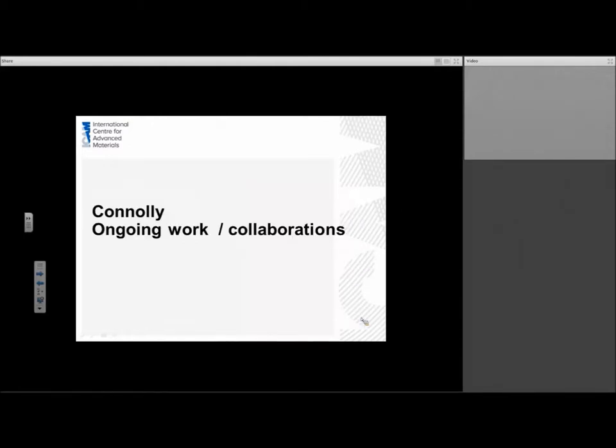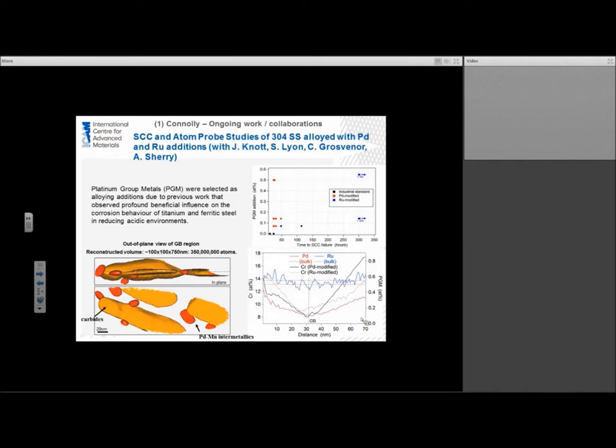Those are three nice examples of people using new techniques and improved systems to get a better understanding of corrosion mechanisms. Now I'm going to go on to the next section of the talk where I'm going to give you a little bit of overview of some of the things that I'm doing. Here again I'm going to emphasize the use of new facilities and new techniques to get a better understanding of corrosion mechanisms. The first thing that I want to talk about is a bit of work that I did with John Knott, Stuart Lyon, Chris Grovenor, and Andrew Sherry. We were looking at SCC and atom probe studies of 304 stainless alloyed with palladium and ruthenium additions.